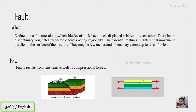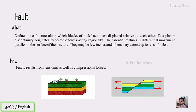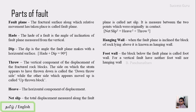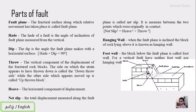To begin with, the first one is the parts of a fault. The first part is the fault plane. The fractional surface along which the relative movement has taken place is called the fault plane. So once this rock was continuous, and due to faulting this portion has been thrown down along the plane, and this plane is referred to as the fault plane.